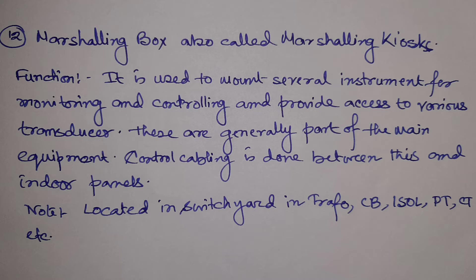Control cabling is done between the marshalling box and the indoor panels. The marshalling box is an outdoor element located alongside the transformer, circuit breaker, isolator, PT, CT, etc. For a transformer, all winding temperature indicators and oil temperature indicators come to the marshalling box. Internal relays and transducers, as well as the neutral CT, are also terminated here. For the circuit breaker, external interfacing points are wired to the marshalling box. Similarly for isolators, PT, CT, etc., all internal wiring is taken to the marshalling box, from which control cabling runs to the indoor panels.